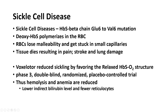Bilirubin is an indication of how fast your red blood cells are dying — as red blood cells die, the heme from the hemoglobin becomes bilirubin and that level goes up. Fewer reticulocytes means less demand for replacement: in sickle cell anemia, because red blood cells are dying, the body makes more reticulocytes to replace them. A reduction in reticulocytes indicates less hemolysis.